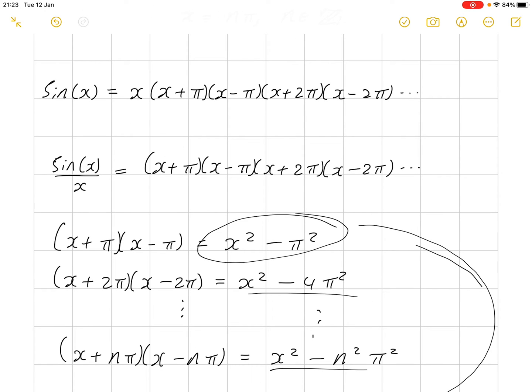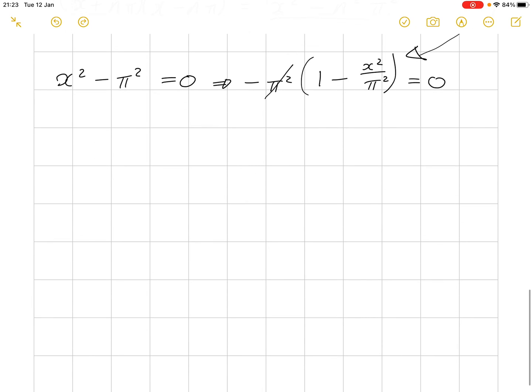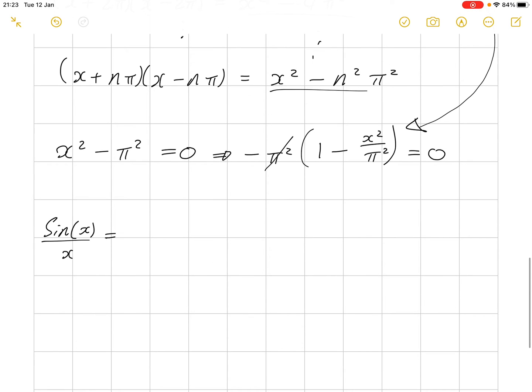So, if we go back up here, we can actually rewrite this sum and investigate the result that follows. Sine of x over x is equal to 1 minus x squared over pi squared times 1 minus x squared over 4 pi squared times 1 minus x squared over 9 pi squared. And, again, this infinite product continues.